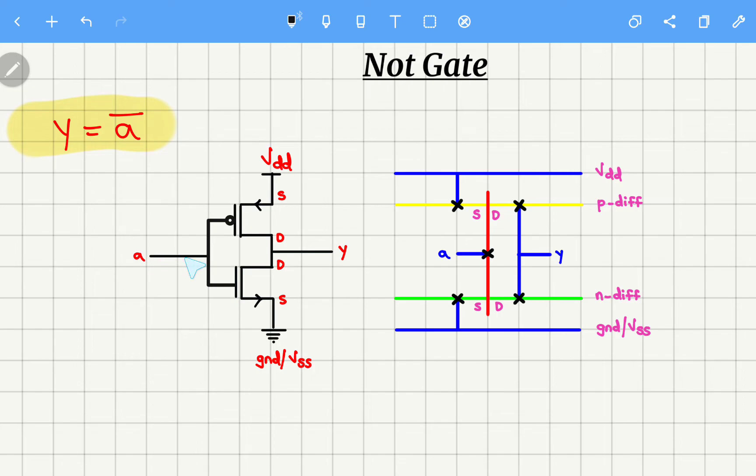Next, here input A. A is nothing but a metal which is connected to polysilicon. So here this red is polysilicon, and this blue is nothing but a metal which is input A.